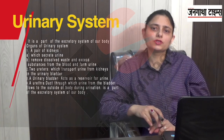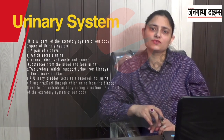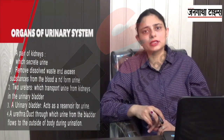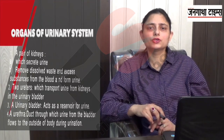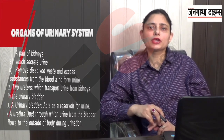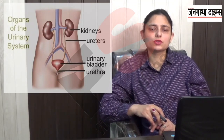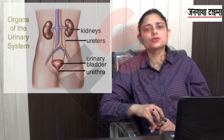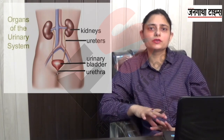The organs of the urinary system are: first is the pair of kidneys — the right kidney and the left kidney. The kidneys secrete urine; they purify the blood and remove all the wastes, throwing them out in the form of urine. Second is a pair of ureters, which are small pipes that transport urine from the kidneys. And a single urethra, which is responsible for expelling urine out of the body. So these are the organs of the urinary system.